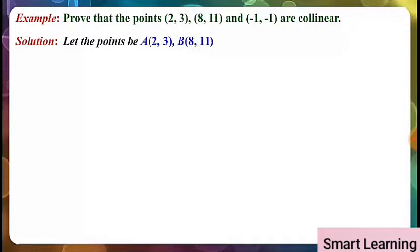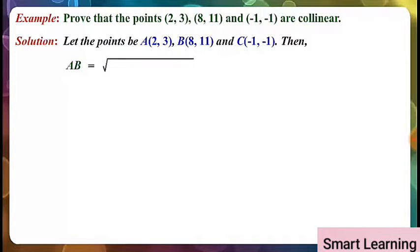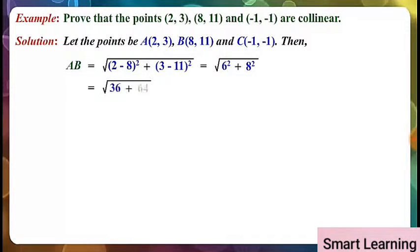Let's solve this. Let the points be A(2,3), B(8,11) and C(-1,-1). Then AB is equal to under root of (2 minus 8) whole square plus (3 minus 11) whole square, equal to under root of 6 squared plus 8 squared, equal to under root of 36 plus 64, equal to under root 100, equal to 10.